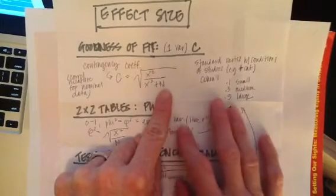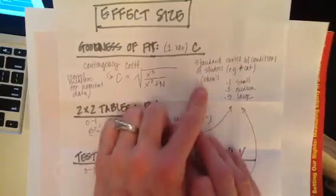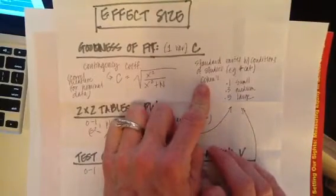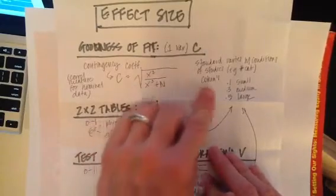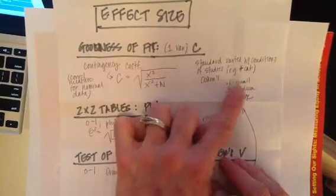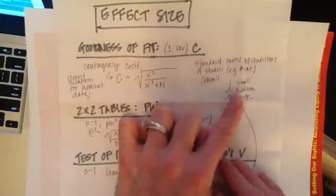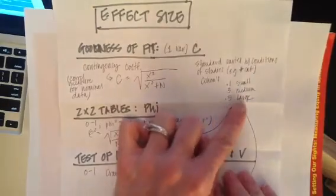We're going to use Cohen's standards for interpreting the contingency coefficient. If you have a contingency coefficient that's 0.1, that's small, 0.3 is medium, 0.5 or higher is large.